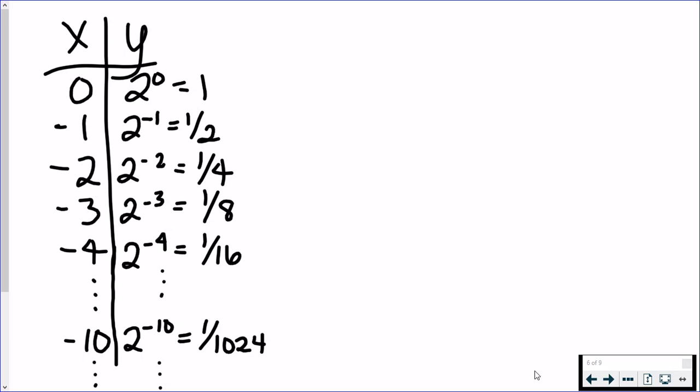Plug in negative 2, we get 2 to the negative 2. That means it's really 1 over 2 to the positive 2, or 1 over 4.